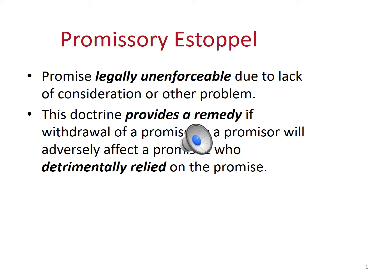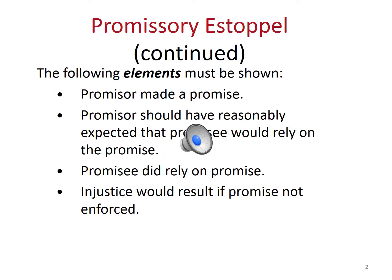In order for the promissory estoppel doctrine to apply, the promisee must prove the following four elements. The first element is that the promisor made a promise. The second element is that the promisor should have reasonably expected that the promisee would rely on the promise. This means that when the promisor made the promise, it was reasonable to expect that the promisee would rely on it.